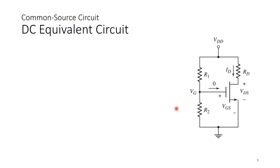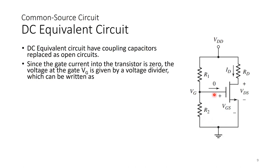This is the DC equivalent circuit — the capacitor has been replaced with an open circuit. Since the gate current into the transistor is zero — if you remember when we did the MOSFET device, between the gate and the substrate is like a capacitor and therefore that section is an insulator — it does not draw any current. So the gate current into the transistor is zero.